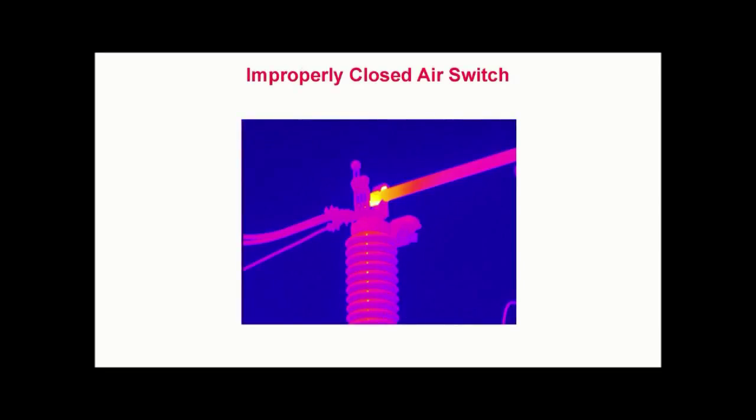Improperly closed air switch. In this thermogram from an outdoor substation, we see localized heating within the jaw of a large air switch. In this image, excess heat is shown in yellow and white. Upon further investigation, it was found that the switch was not properly closed.